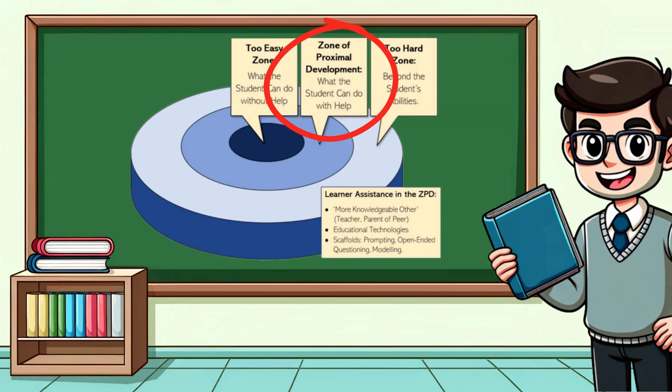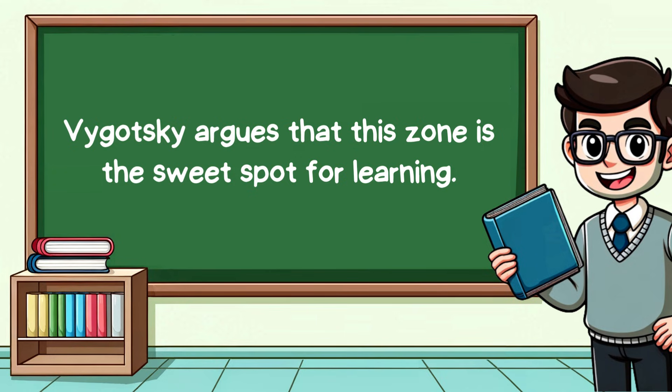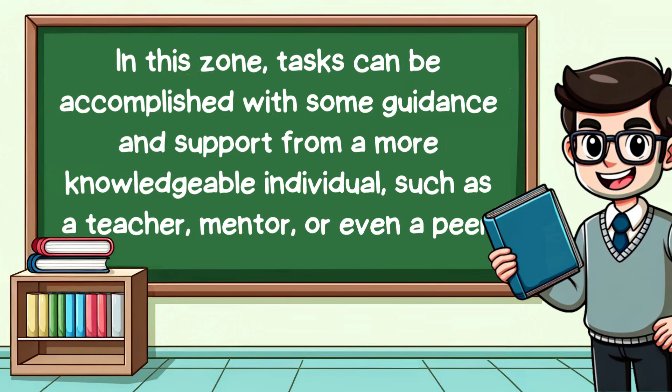There's a zone in between, where a task is too hard to do alone, but can be done with the help of a teacher. This is the Zone of Proximal Development. Vygotsky argues that this zone is the sweet spot for learning. In this zone,